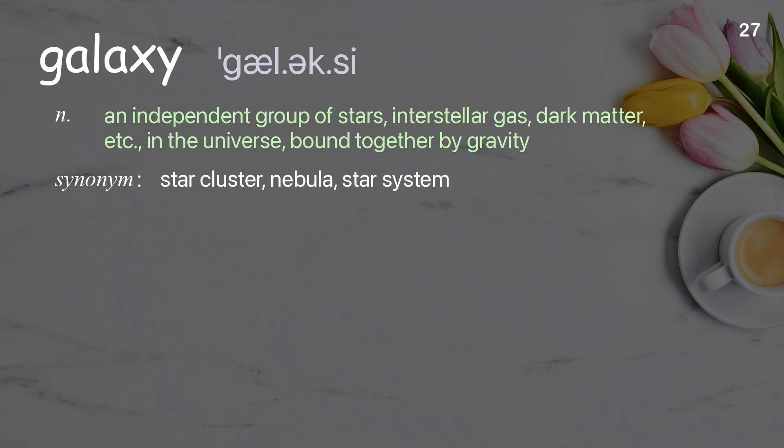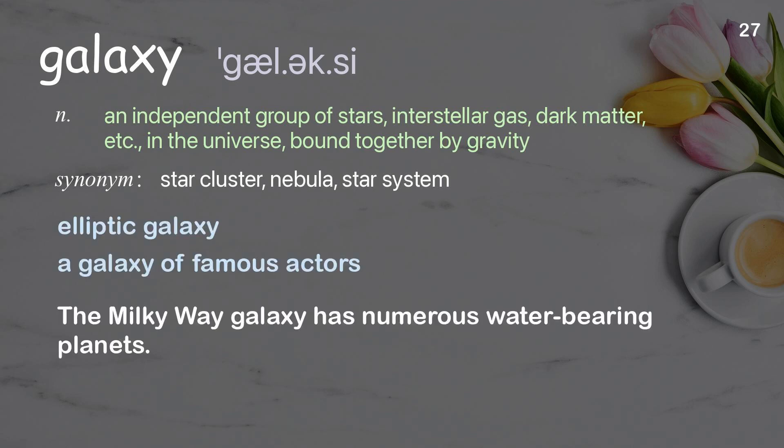Galaxy: an independent group of stars, interstellar gas, dark matter, etc., in the universe, bound together by gravity. Examples: elliptic galaxy; a galaxy of famous actors. The Milky Way galaxy has numerous water-bearing planets.